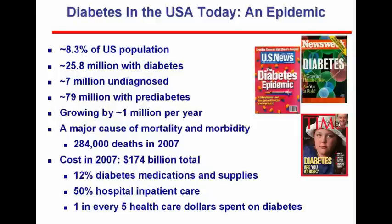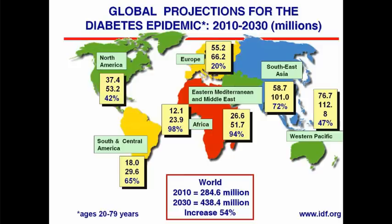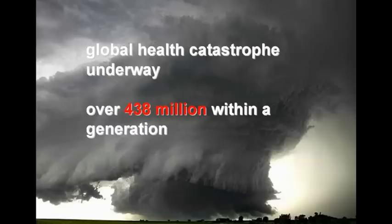The cost in 2007 was $174 billion in the United States alone — 12% for medications and supplies, and 50% for hospital inpatient care. Almost one out of every four health care dollars is spent on the care and treatment of diabetes. By the year 2030, it's predicted that about 439 million people worldwide will have diabetes — what amounts to a global health catastrophe.